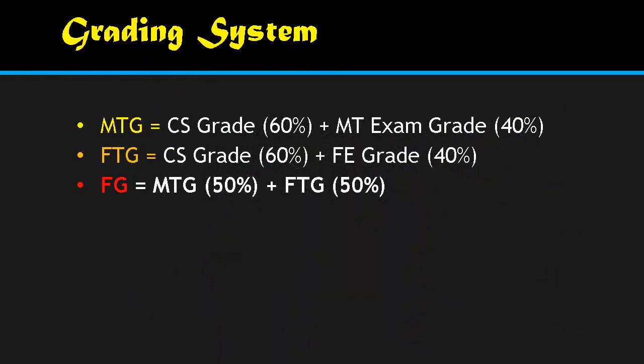You also have your grading system, which is very important for you to know in order to compute your grade for midterm as well as finals. For your midterm standing: class standing grade is 60% plus midterm exam grade is 40%, for a total of 100%. For your final tentative grade: class standing is again 60% and the final exam is 40%. To compute your final grade, take your final tentative grade at 50% plus your midterm tentative grade at 50%, then get the average to arrive at your final grade.